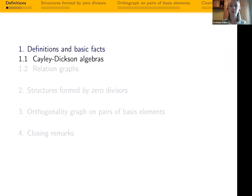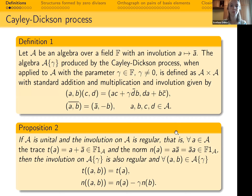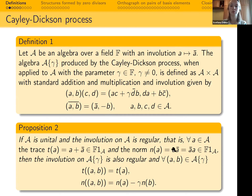First of all, I will recall the definition of real Kelly-Dixon algebra. Kelly-Dixon algebra occurred yesterday in the talk of Adam Chapman, so you have already seen this definition. Let A be an algebra over a field F with an involution. A can be non-commutative, non-associative, or even non-unital. We take a non-zero field parameter gamma. Then the algebra A-gamma produced by the Kelly-Dixon process is defined as follows: its set is the set of ordered pairs of elements of A with component-wise addition, and multiplication and involution are given by these two formulas.